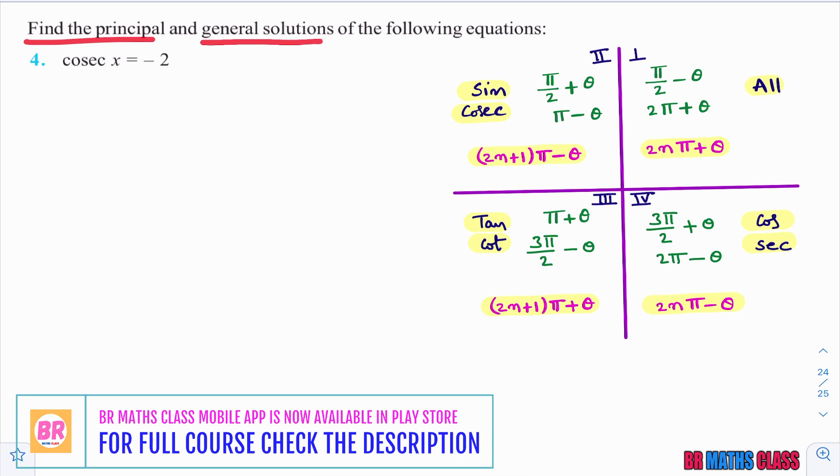Find principle and general solutions of the following equations. They are given here: cosecant x equal to minus 2.